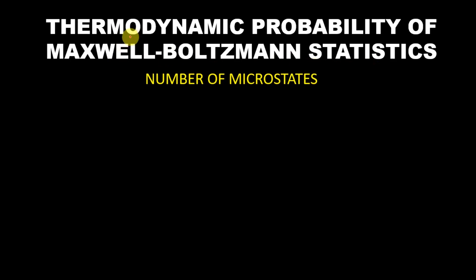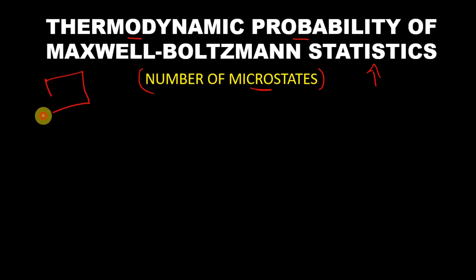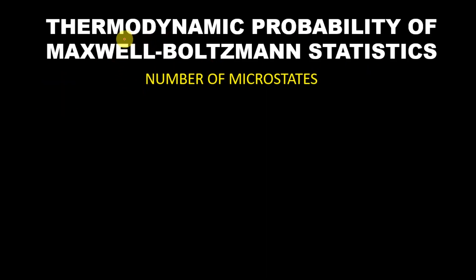To derive them, we need the thermodynamic probability of all three, which is nothing but the number of microstates. When this is at its maximum, our system is at equilibrium, and that will give us the Maxwell-Boltzmann, Fermi-Dirac, and Bose-Einstein distribution functions. In this video, we will derive the thermodynamic probability of a Maxwell-Boltzmann system. In the next video, we will derive the Maxwell-Boltzmann distribution function and so on for the other two.